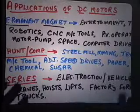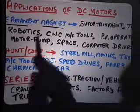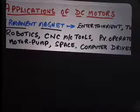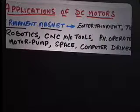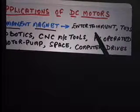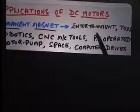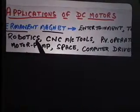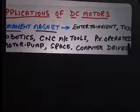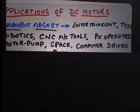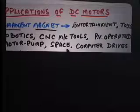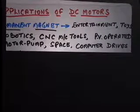Permanent magnet DC motors are used in entertainment electronics — all your video and tape recorders — as well as in toys, robotics, CNC machine tools, PV-operated motor pumps (since photovoltaics are DC), space applications (where supply comes from PV panels), and computer drives. The coming period is going to see a large number of permanent magnet motors.